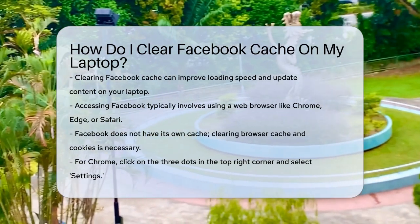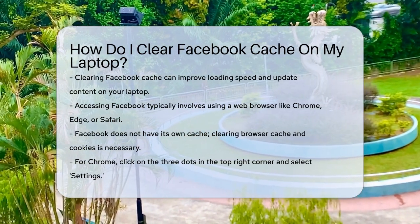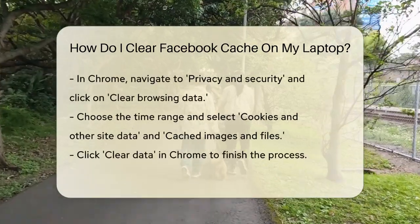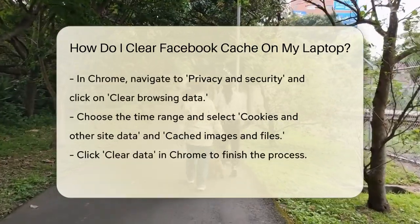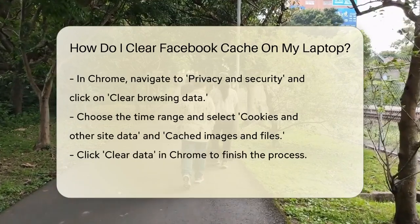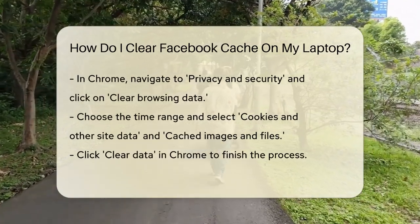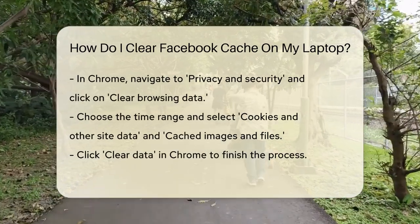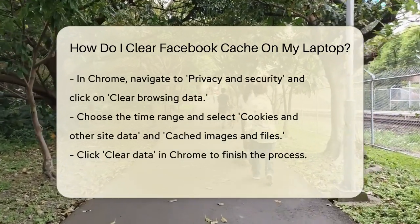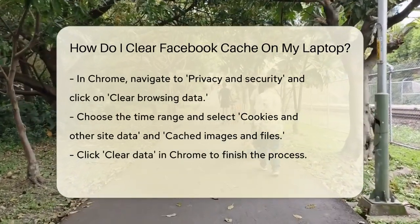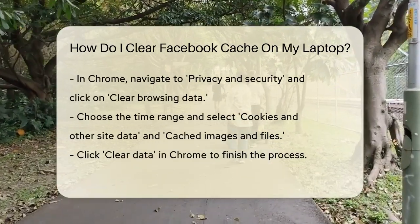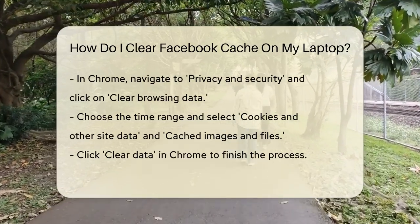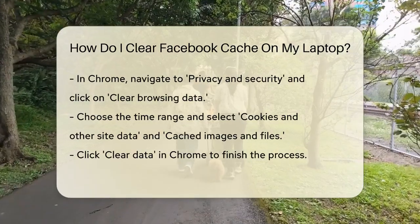Let's start with Chrome. Open Chrome and click on the three dots in the top right corner. Select Settings from the drop-down menu. Scroll down to the Privacy and Security section and click on Clear Browsing Data. Here you can choose the time range for which you want to clear the data. Make sure to check the boxes for Cookies and Other Site Data and Cached Images and Files. Click Clear Data to complete the process.